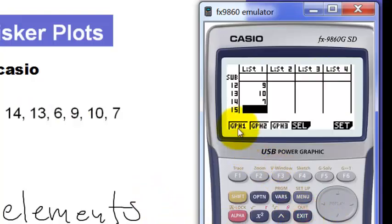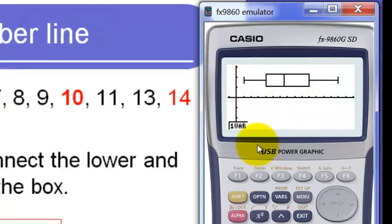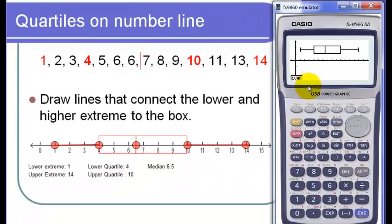Press exit, press F1, and then we have now our box and whisker plot. Now, the question here is, how are we going to identify what is this lower extreme? What is the upper extreme? What is the median? To identify the five different parts of this box and whisker plot, we just have to press F1 and scroll down.